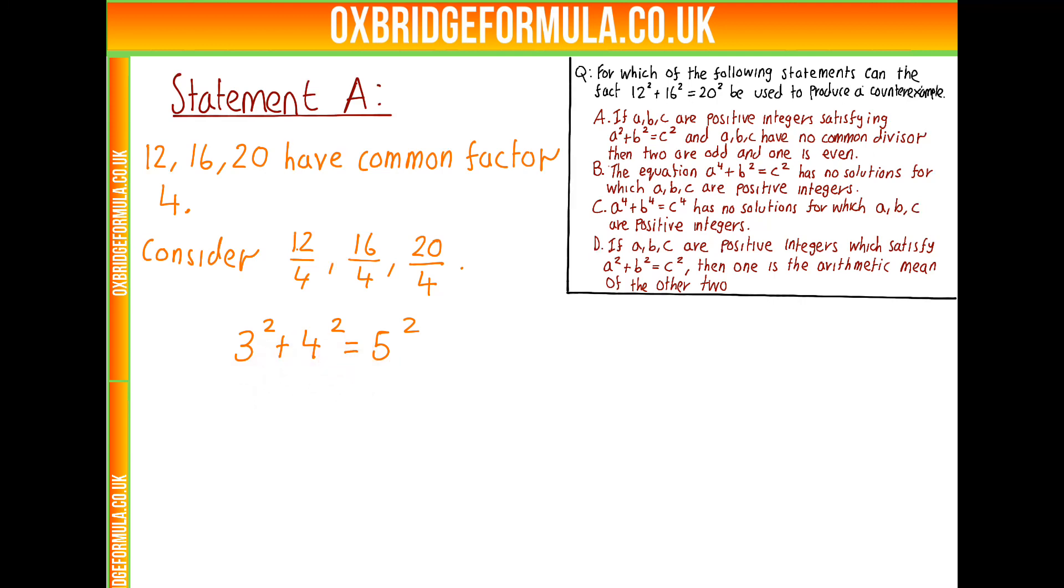Maybe this is a counterexample. It certainly satisfies the first condition that A squared plus B squared is C squared, and 3, 4, and 5 don't have a common divisor. However, 2 are odd and 1 is even, which is true. So it isn't a counterexample because it agrees with what statement A says. From statement A, there's no easy way to make a counterexample, so let's move on.